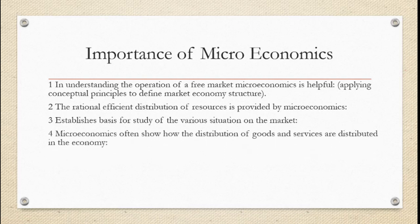The next point is that microeconomics shows how distribution of goods and services works in the economy — related to GDP, national income, and resources. For example, if a person has an income of 30,000 rupees, microeconomics examines how much is expenditure, how much is saving, and where those savings go. All this information is part of microeconomics.